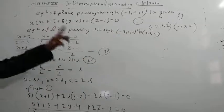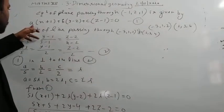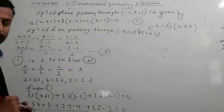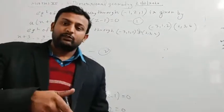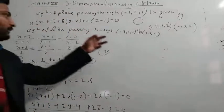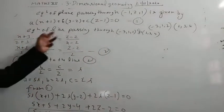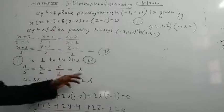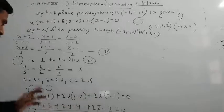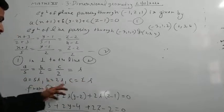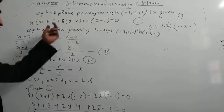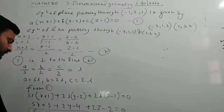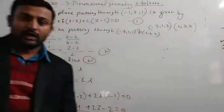The plane is perpendicular to this line. Since A, B, C are the direction ratios of the normal which is perpendicular to the plane, and this line is also perpendicular to the plane, we say A/5 = B/2 = C/2 = lambda, so A = 5 lambda, B = 2 lambda, C = 2 lambda. Putting these values in equation one, the equation of plane is 5x + 2y + 2z minus 1 = 0.